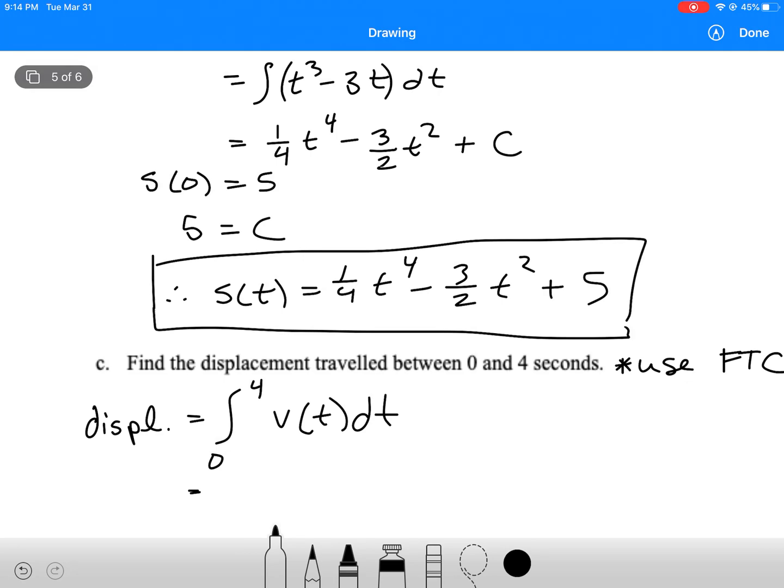And so what I can do is integrate that. I'm going to integrate v(t), or you can use your graphing calculator, t cubed minus 3t dt. I did already integrate that, so I've got 1 quarter t to the 4 minus 3 over 2 t squared, evaluated at 4 and 0.